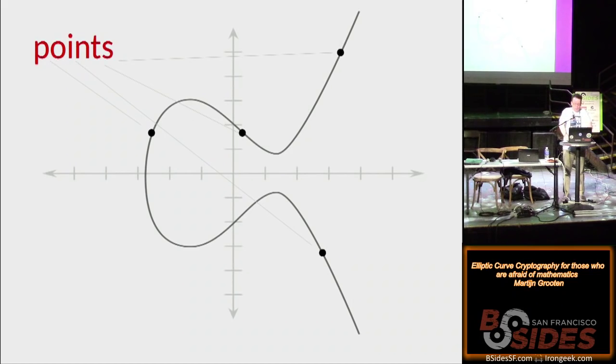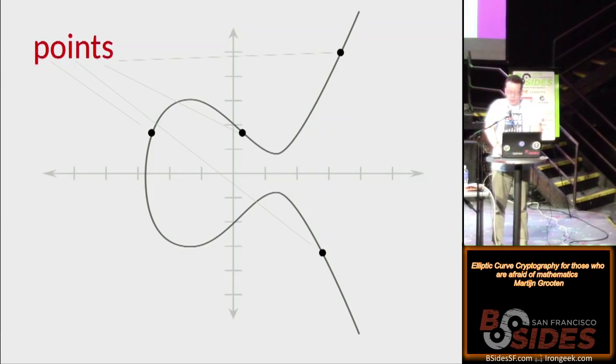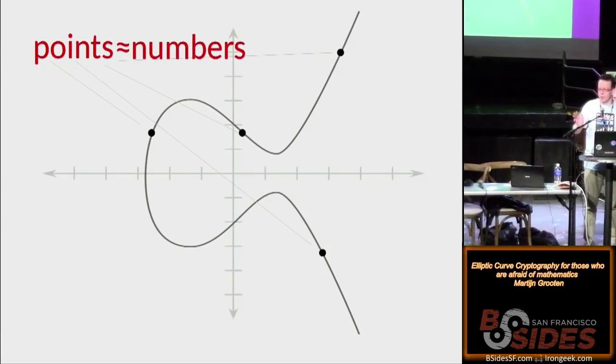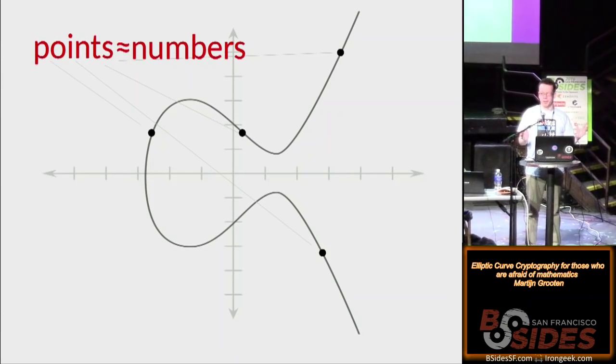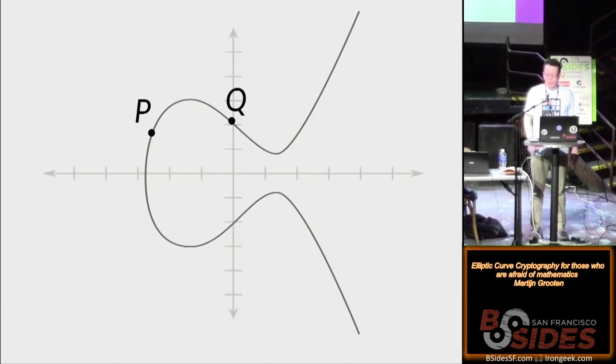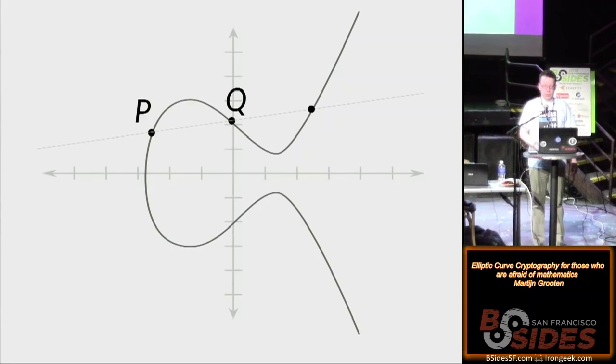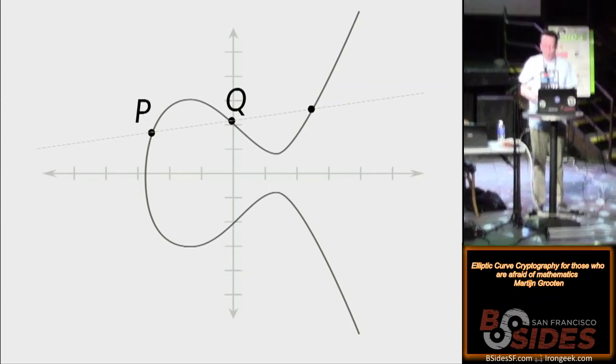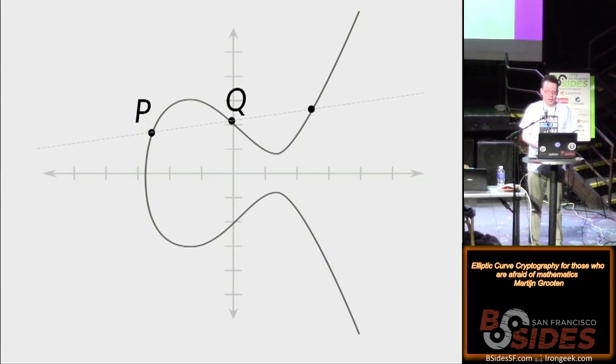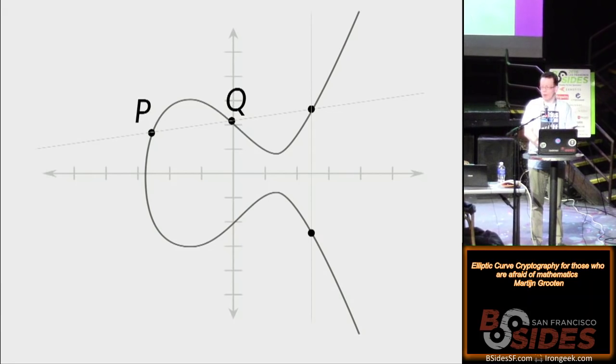And on an elliptic curve there are points, and these points play an important role. As you may remember from secondary school, points can be represented by two coordinates. And I will assume, and that's one of these things where I'm cutting corners, that a computer represents a point by a number. So points and numbers are the same thing.